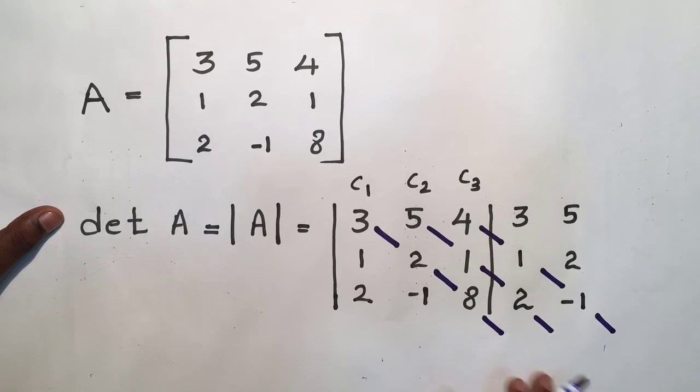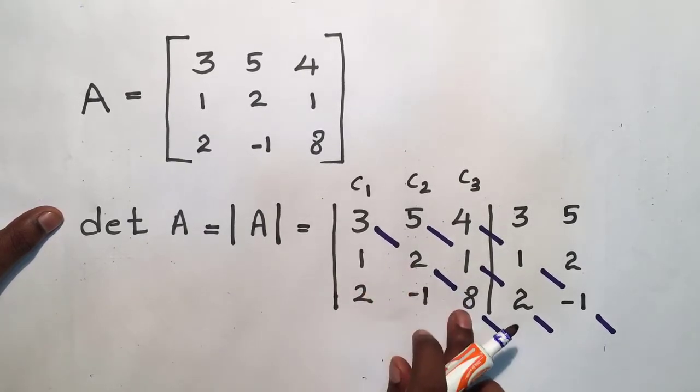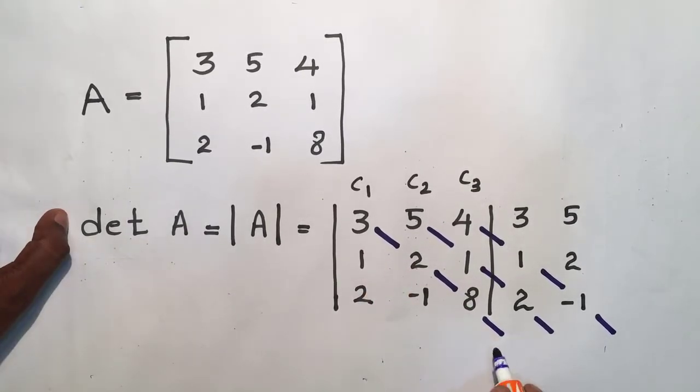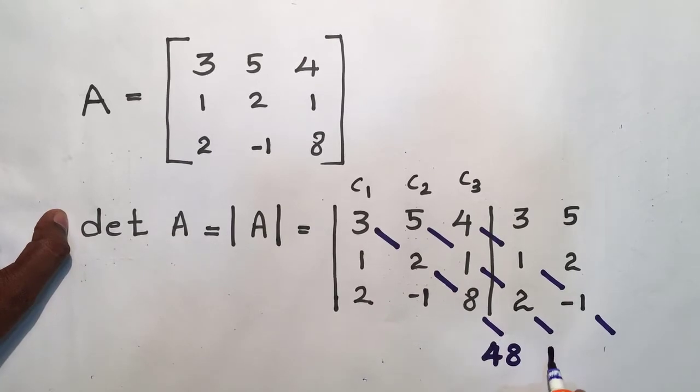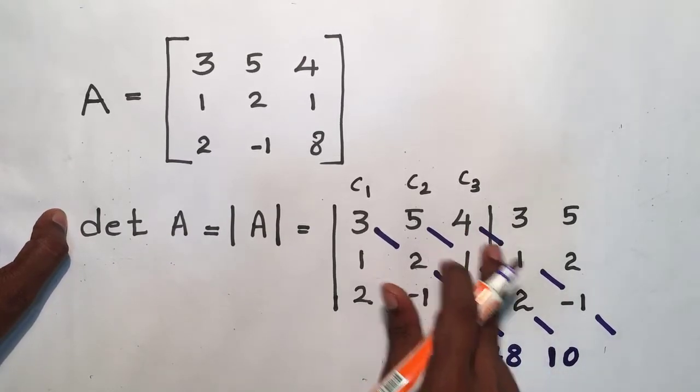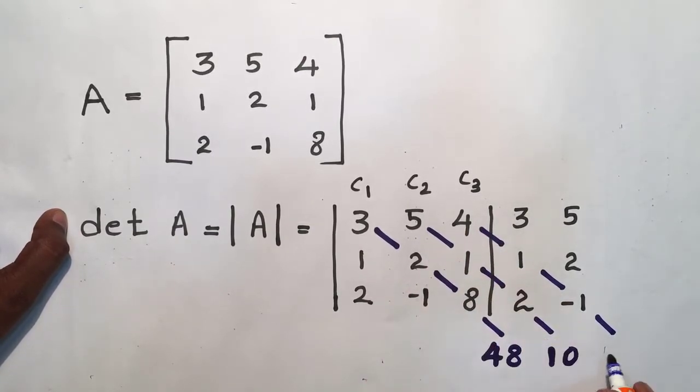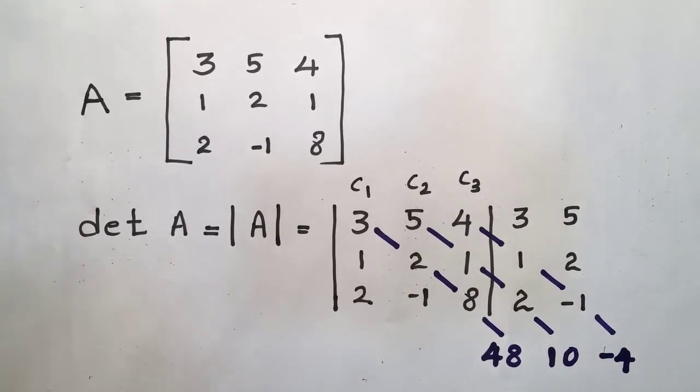The first diagonal is 3 into 2 into 8, which is 48. Then the second diagonal is 5 into 1 into 2, which is 10. Then the final diagonal is 4 into 1 into -1, which is -4.